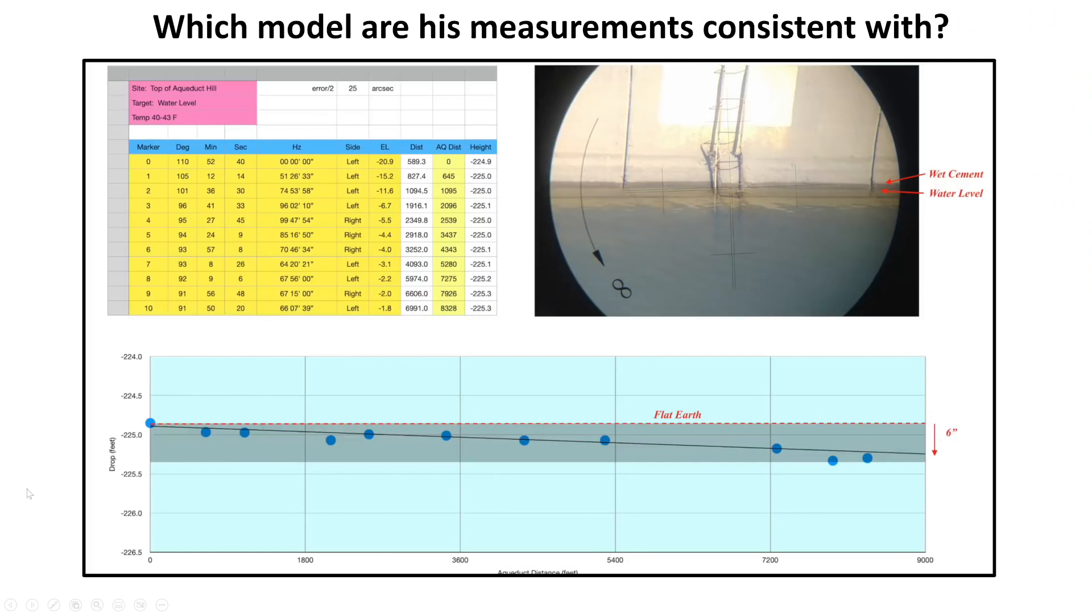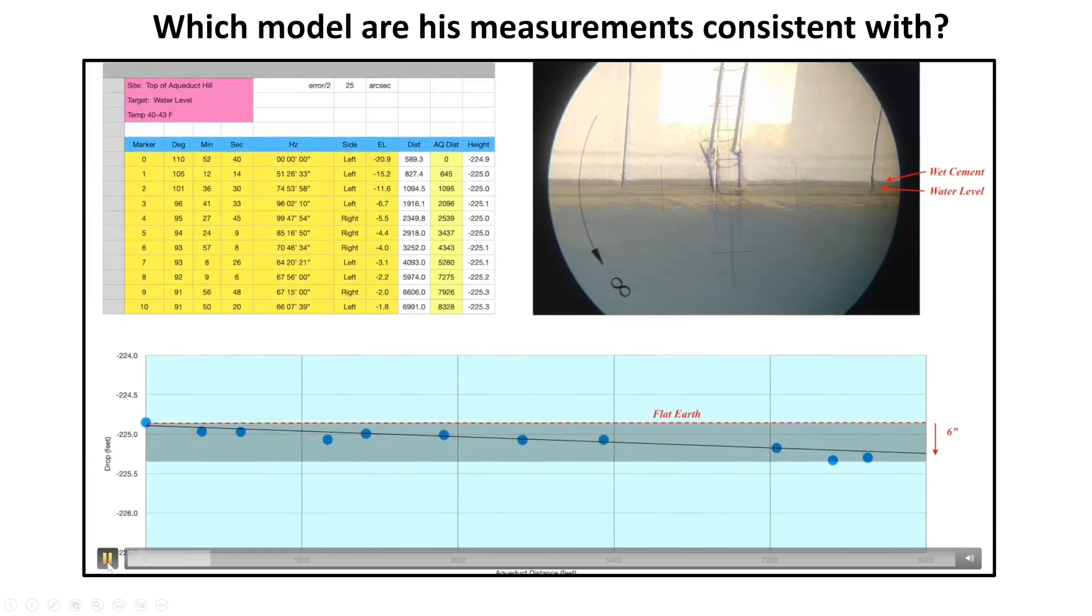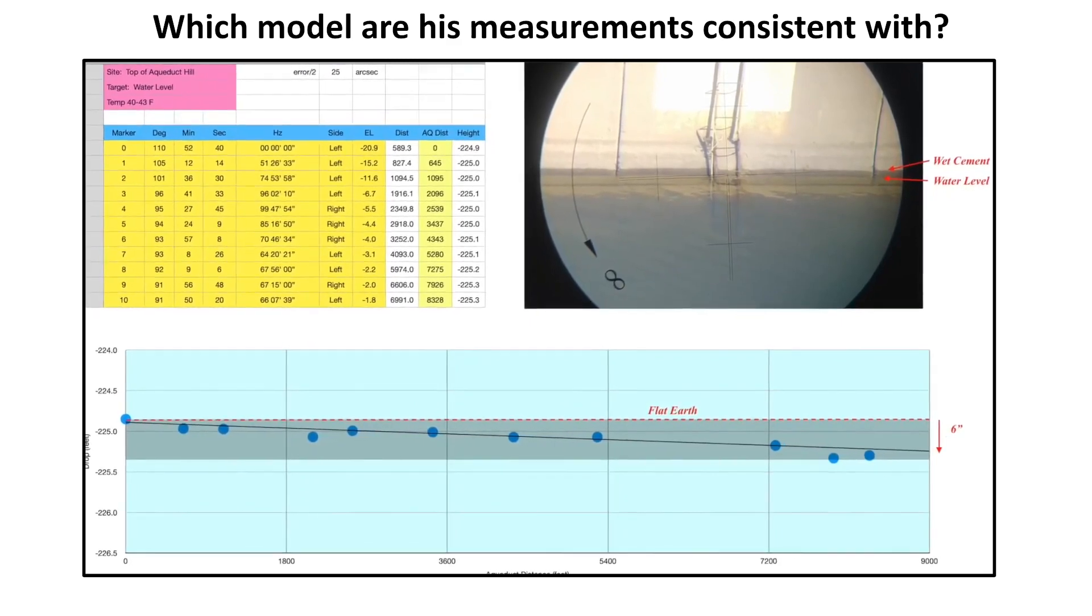The other thing to take note of, before I play this clip is the image in the top right. He had great difficulty, distinguishing between the actual water level, and the few inches of wet cement or wet concrete above the water. And the image is showing here is the shot to marker number zero, which is the closest. It's less than 600 feet away. So you can imagine how hard it would be getting an accurate shot if he's shooting over a mile. So anyway, let's listen to JT tell us how he's measured the water dropping away from horizontal because he thinks it's a river, when the data that we have tells us that we're looking at a lake. The water level was dropping along a slant dictated by three inches per mile. So in about two miles, it's about six inches. I plotted this data based on the aqueduct distance along the aqueduct, not direct line of sight.